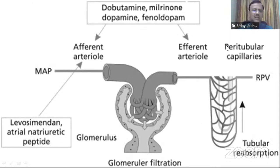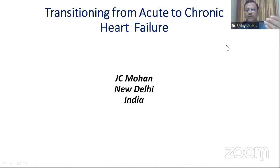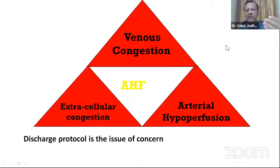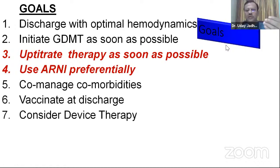Levosimendan acts on the afferent arteriole, improving renal blood flow and GFR. Dobutamine and milrinone also improve renal blood flow but GFR may drop. Combining both raises renal blood flow further though GFR remains constant. Dr. JC Mohan spoke on the acute-to-chronic heart failure discharge protocol: discharge with optimal hemodynamics, initiate guideline-directed therapy as early as possible, up-titrate as soon as possible, use ARNI preferentially, and address all comorbidities including thyroid, anemia, and respiratory infections.